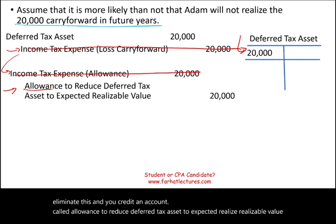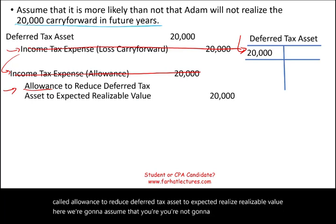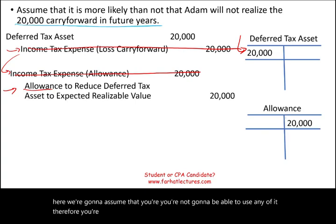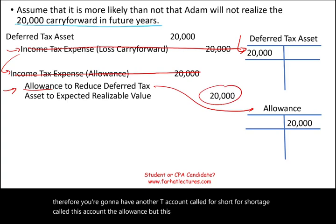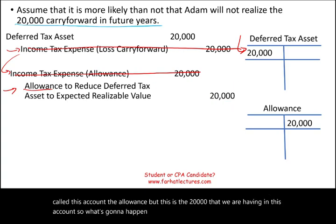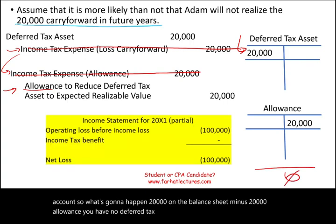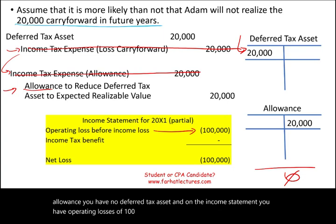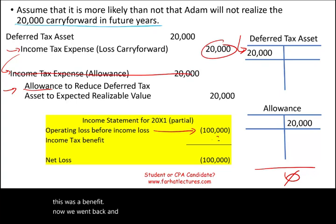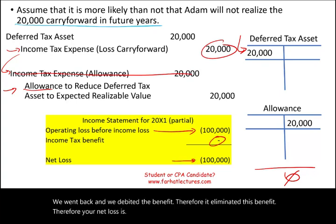Assuming you're not going to be able to use any of it, you're going to have the allowance account of $20,000. On the balance sheet: $20,000 deferred tax asset minus $20,000 allowance — you have no net deferred tax asset. On the income statement, you have operating losses of $100,000. The income tax benefit that was originally booked is now eliminated by the debit to income tax expense. Therefore, your net loss is $100,000.